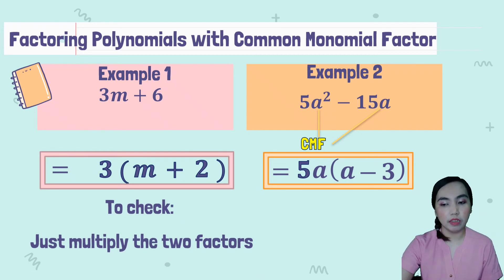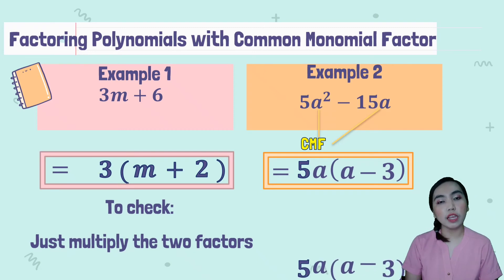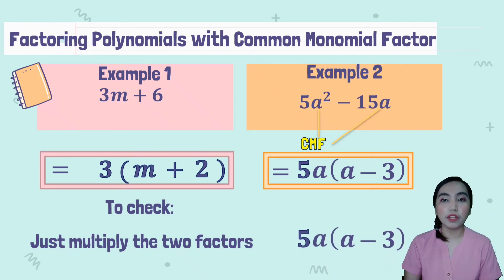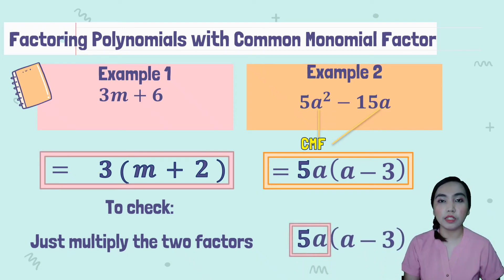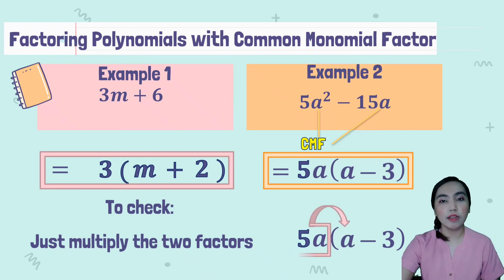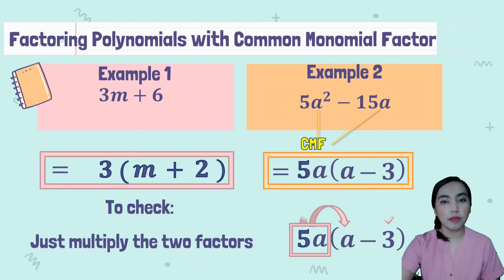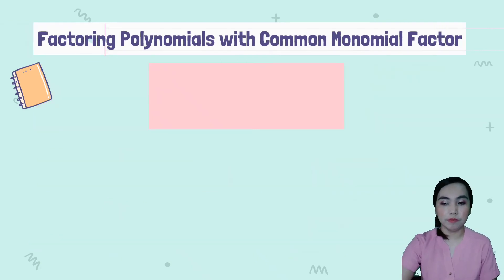So to check, just multiply the two factors para malaman natin at lumabas yung given mismo. So 5a times (a minus 3): si 5a, i-multiply mo muna kay a, minus 5a multiply mo kay 3.